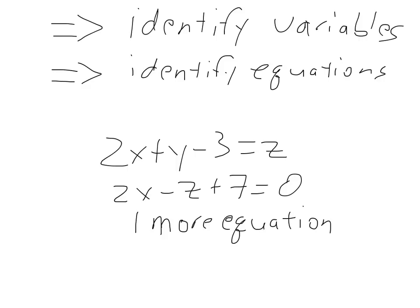You go back, figure out that equation, come back, write it down, and then solve for your unknown variables. Just writing down equations and trying to solve for unknowns without knowing the system is solvable is going to give you a headache. You've got to know what your variables are, what your equations are, and what the degrees of freedom is.